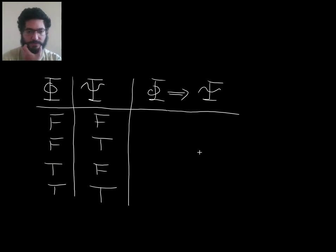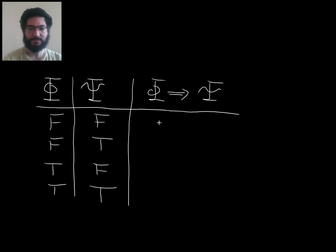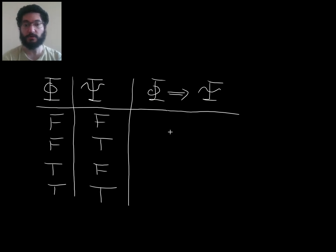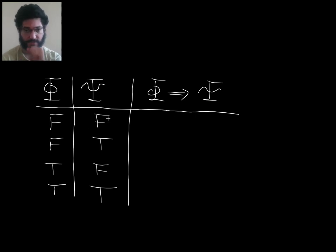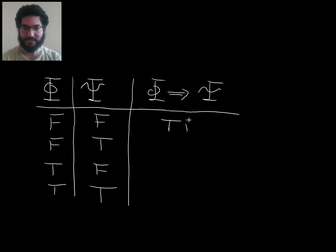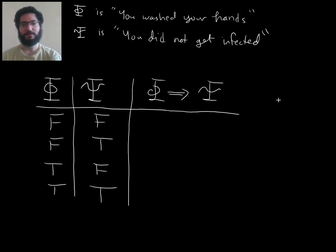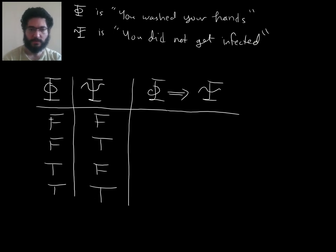One way to think about this intuitively is to just imagine that you know, say in this first case, that phi and psi are both false, and then someone says 'if phi is true then psi is true.' What would you say in that situation? Would you say that person lied to you or told the truth? Let me make a more explicit example. Let's say phi is 'you washed your hands' and psi is 'you did not get infected,' and in each of these rows we're thinking about a different truth situation for phi and psi.